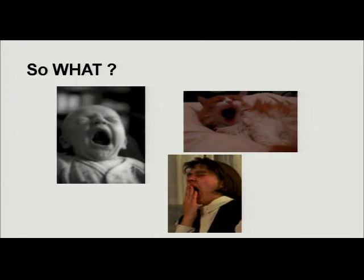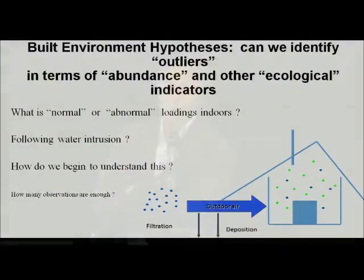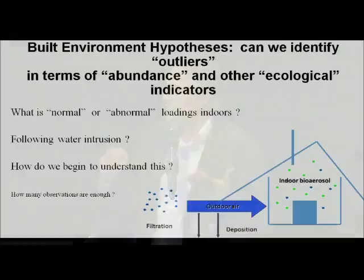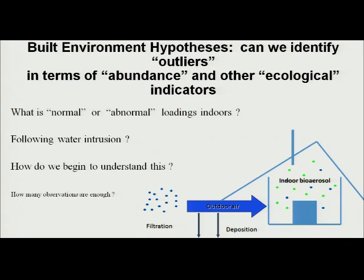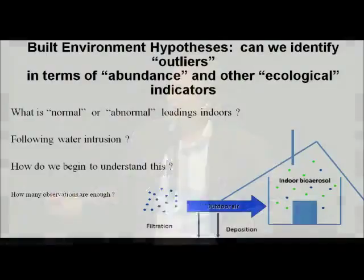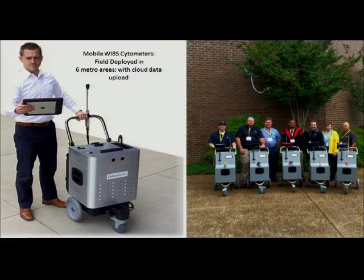We've got this library, now we've got to go to the field because that's what the practitioners want in their hands. In my year on sabbatical we've been doing this. What we want to get — both with the genetic analysis and any estimate of biological loading — is what's normal, what's abnormal, what's normal following water intrusion, which is a lot of the focus of what we do in terms of generating indoor bioaerosol. How do we begin to understand all three spheres together, leveraging this type of information? And as always, how many observations are enough?